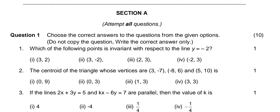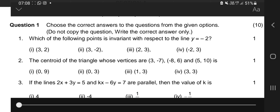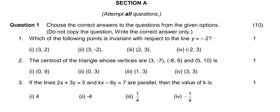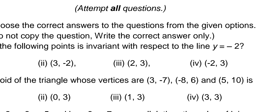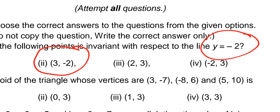Question number 1: which of the following points are invariant under the line y = -2? Y = -2 means your y-coordinate should be fixed at -2. So the point (3, -2) becomes an invariant point, because the y-coordinate is fixed at -2.